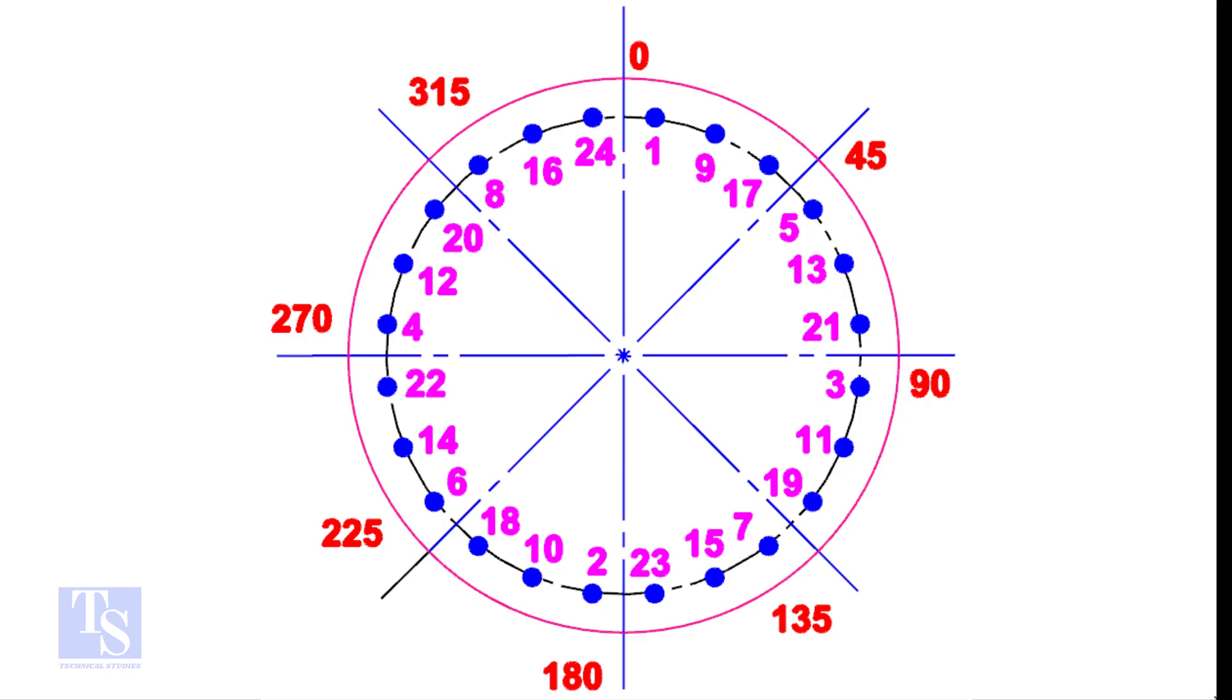For larger flanges, divide the bolts into 8 equal groups. Apply the same method. The difference between the two nearest holes will be 8.